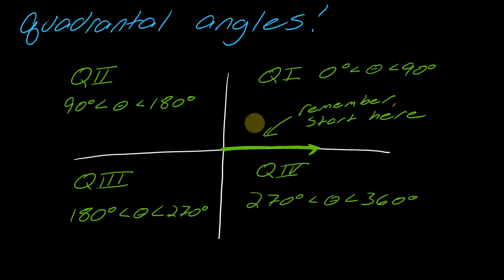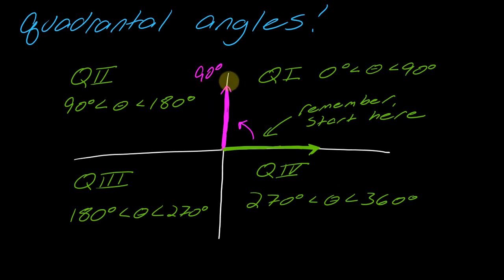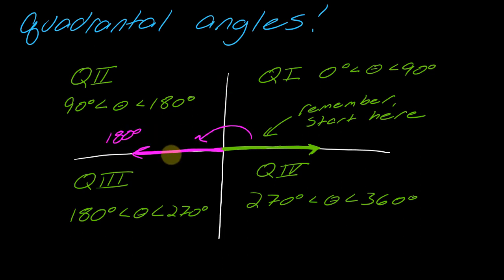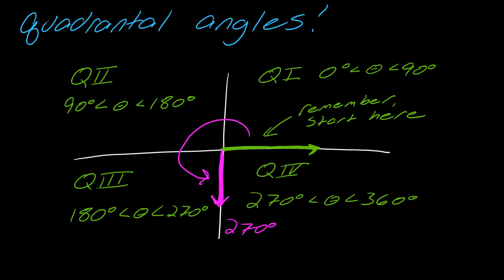Here is my rectangular coordinate system. With standard position you always start here — this is always your initial side — and what makes a quadrantal angle quadrantal is that you're going up to one of the axes. Here on the y-axis this creates a 90 degree angle, here it creates 180 degrees, and continuing around creates a 270 degree angle. So we're measuring theta starting from here and swinging around.